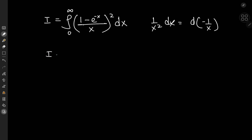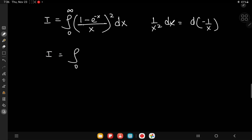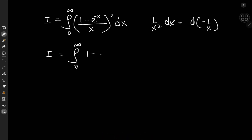So we can write the integral i as the integral from 0 to infinity of (1 minus e to the negative x squared) d(negative 1 over x).